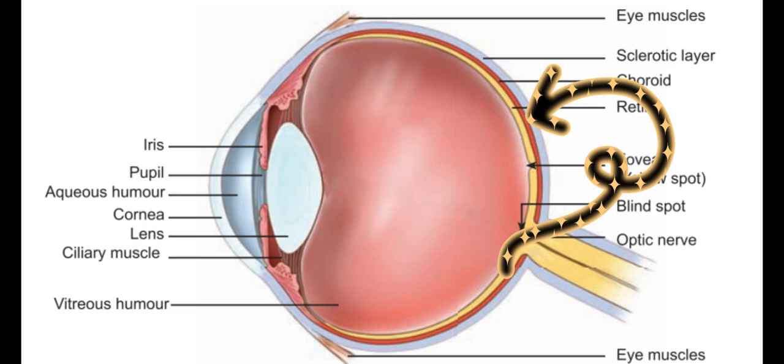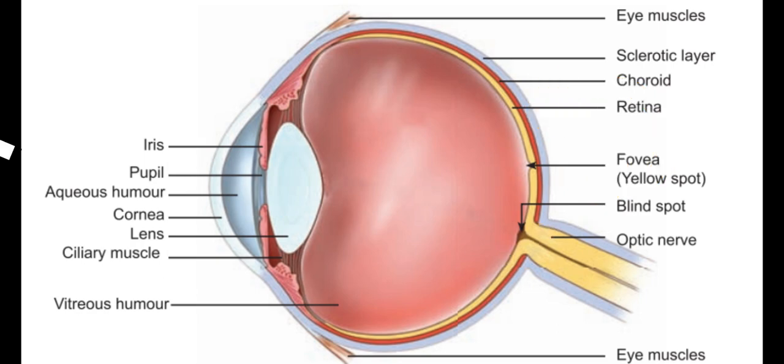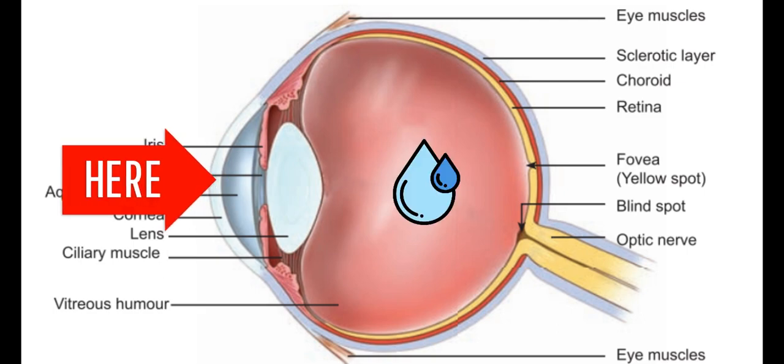Then the cornea, which is a thin part of the sclerotic layer in front of the eye. This is the iris - it controls the amount of light entering the eye.